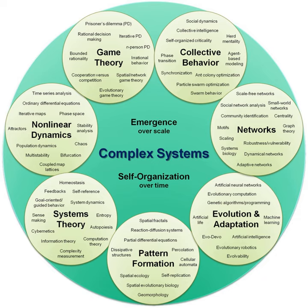Complex systems is chiefly concerned with the behaviors and properties of systems. A system, broadly defined, is a set of entities that through their interactions, relationships, or dependencies, form a unified whole. It is always defined in terms of its boundary, which determines the entities that are or are not part of the system. Entities lying outside the system then become part of the system's environment.